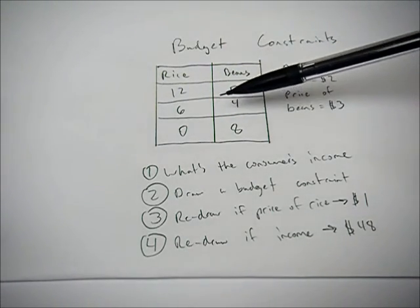Hello. This video is going to go over how to solve budget constraint problems with a particular problem in mind. So this one gives us information on two different goods, rice and beans, and it shows three different possible bundles that these goods can be purchased at. And then it gives us the price of each of those goods, and then it asks us four questions, which I'll go into in a little bit.